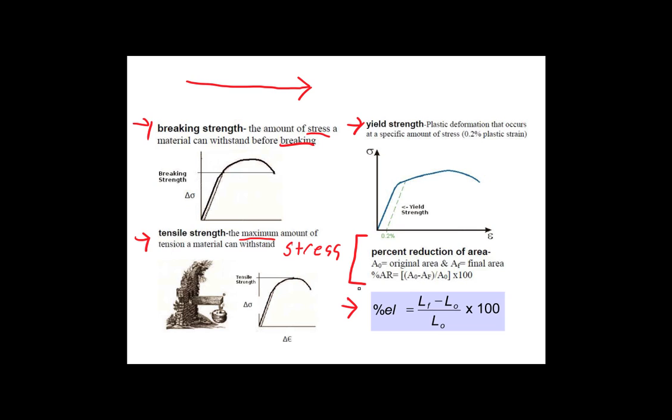So finally, the percent reduction of area is not something you can find off of a stress strain curve, but it's something that you can calculate. It is by definition the original area minus the final area, that entire thing divided by the original area times 100. I did a calculation for this, again, up here, but that is the definition. And basically what it's saying is that when you pull something, when you perform a tensile test on a material, the cross-sectional area will decrease because of necking. So this is the exact amount that it decreased.